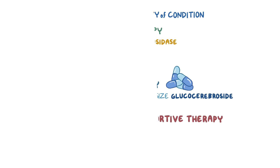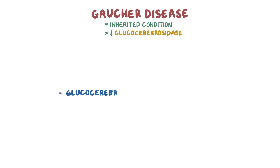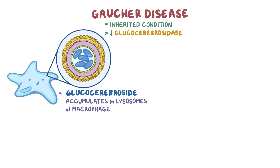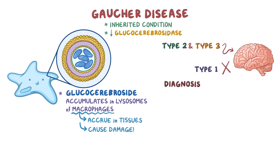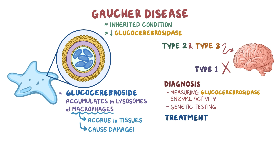Here's a quick recap. Gaucher disease is an inherited condition characterized by insufficient levels of glucocerebrosidase. Glucocerebroside accumulates in the lysosomes of macrophages that accrue in multiple tissues and cause damage. The types 2 and 3 forms of Gaucher disease involve the brain, while type 1 does not. Diagnosis includes measuring the glucocerebrosidase enzyme activity and genetic testing, and treatment includes a manufactured form of glucocerebrosidase.